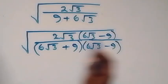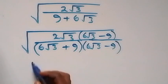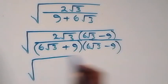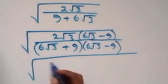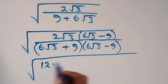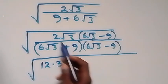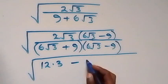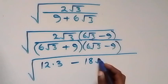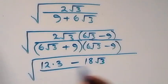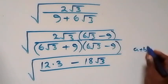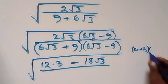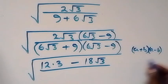Opening the bracket in the numerator: 2√3 times 6√3 — that's 2 times 6 = 12, and √3 times √3 = 3, giving 12 times 3 = 36. Then minus 2 times 9 = 18, times √3. The denominator follows from the identity (a+b)(a−b) = a² − b².